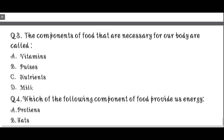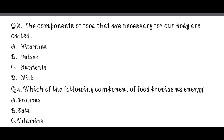Our third question: The components of food that are necessary for our body are called - option A: vitamins, option B: pulses, option C: nutrients, option D: milk. The correct answer is C - nutrients.